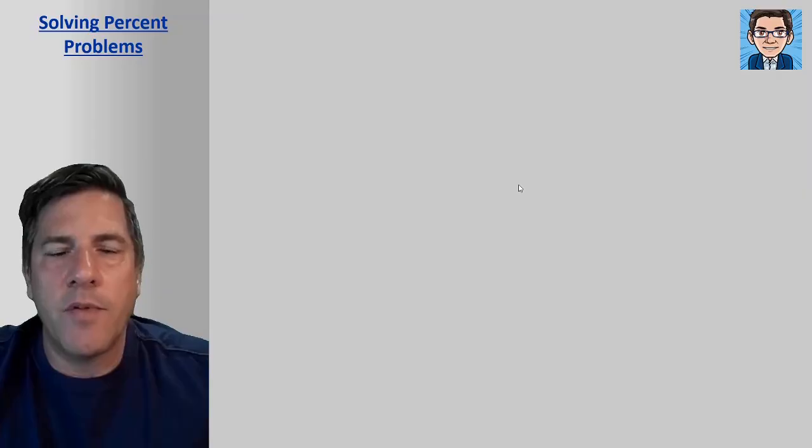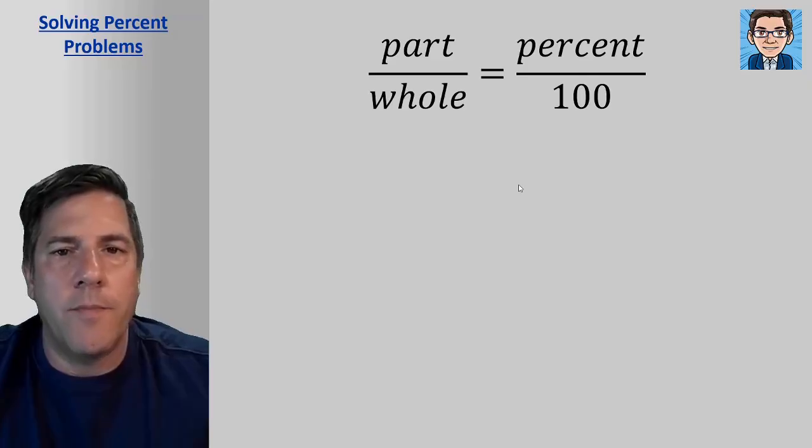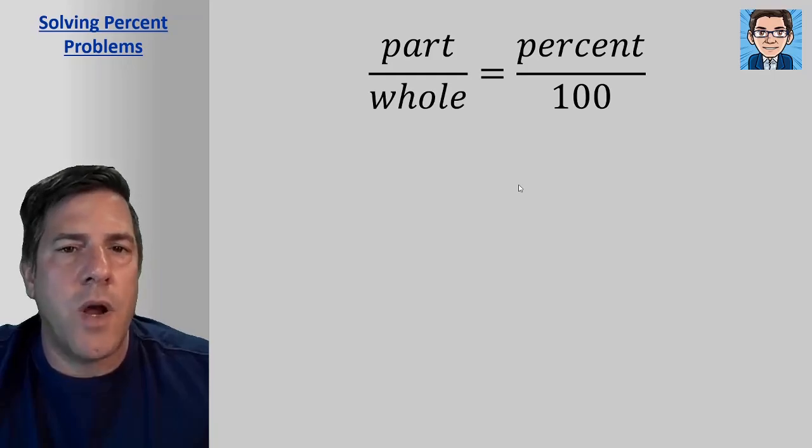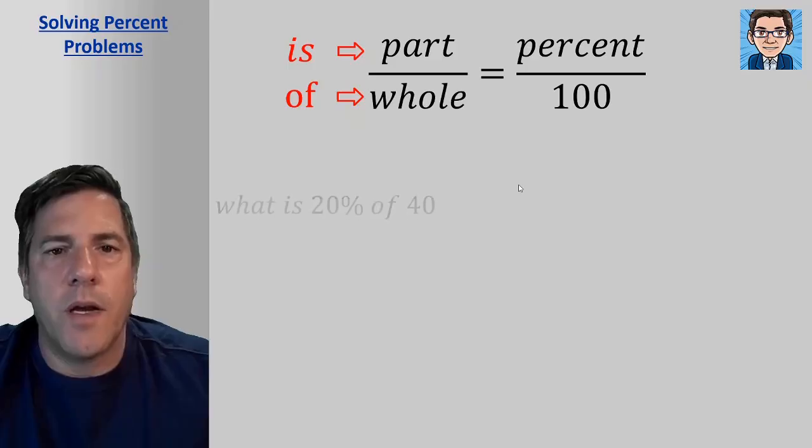So in all problems that we have in doing percentages, they can all be solved with this one equation. So the part over the whole equals a percent over 100. Now in some places you might have heard it, the is over of. Some teachers in some texts describe it as is over of. That's just because in a word problem, when you're talking about the part, it says is, and when you're talking about the whole, it says of. Let me show you what I'm talking about.